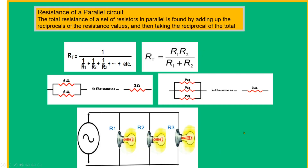Resistance of a parallel circuit: the total resistance is found by adding the reciprocals of each resistance value and then taking the reciprocal of the total. This is the standard formula for parallel resistance. There is also a shortcut formula: if you have 2 resistors of equal value, divide by 2; if you have 3 resistors of equal value, divide by 3.